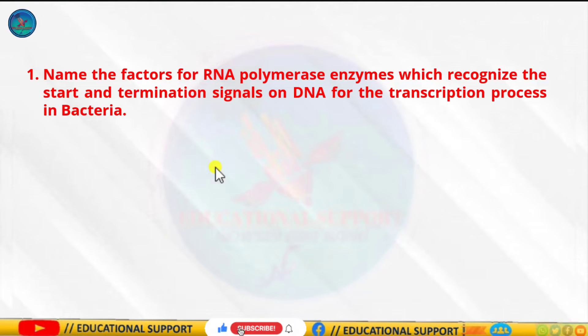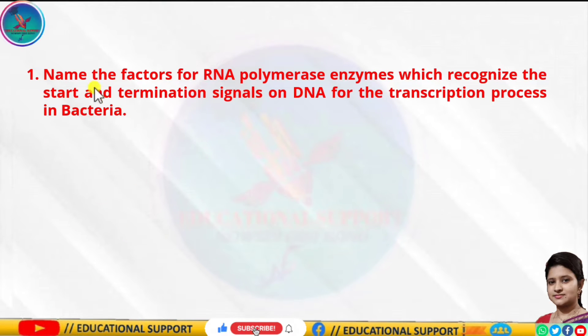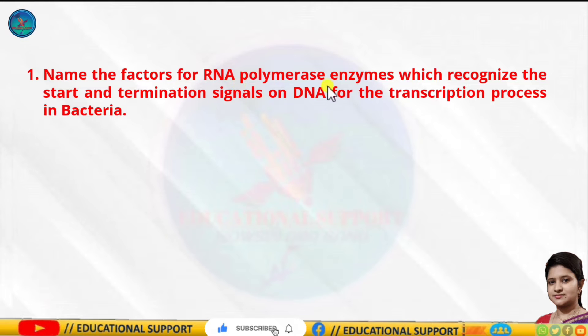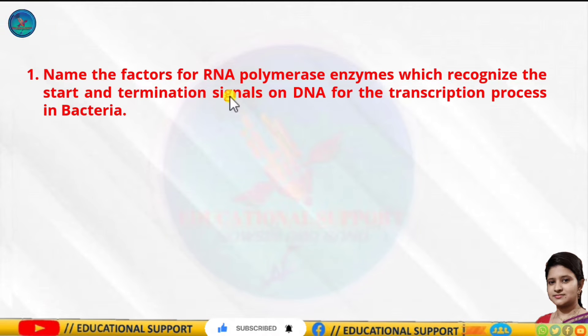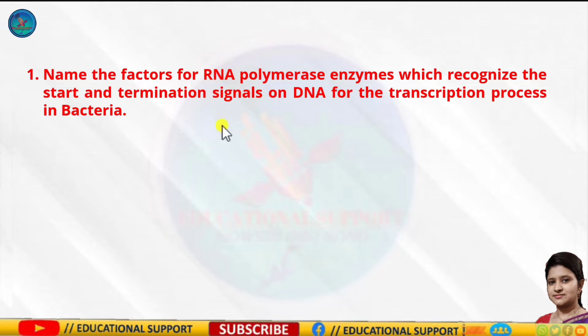Question number one: name the factors of RNA polymerase which recognize the start and termination signals on DNA for the transcription process in bacteria.